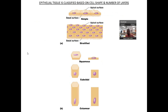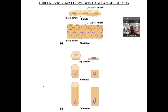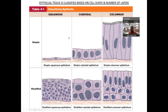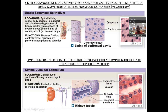Epithelial tissue is one of your four types of body tissues for histology. One of the things you want to focus on is the shape of the cells and the layers of the cells. I'm not going to go over this in great detail because I've made other videos you can watch. Remember, you've got shapes, and then you've got layers.